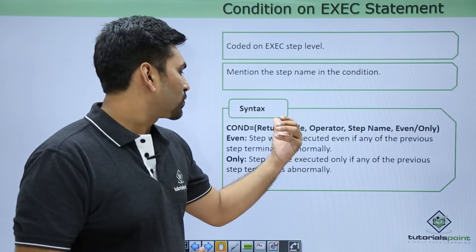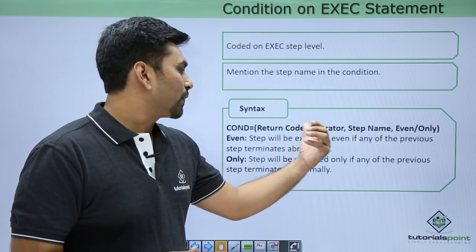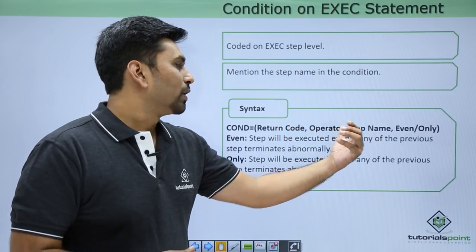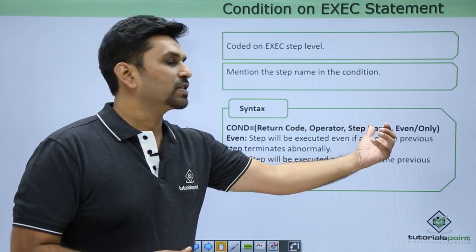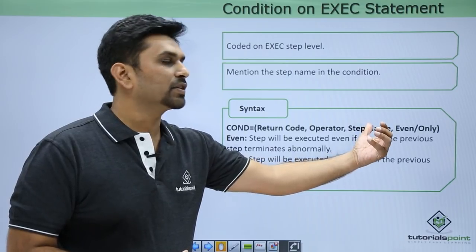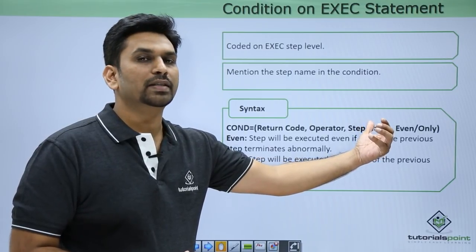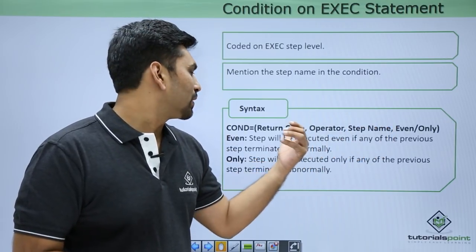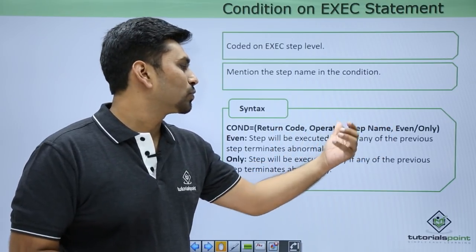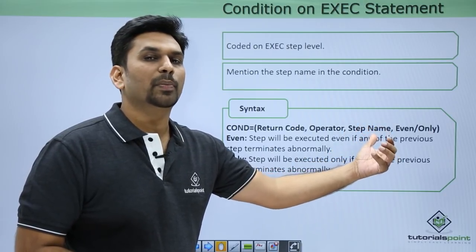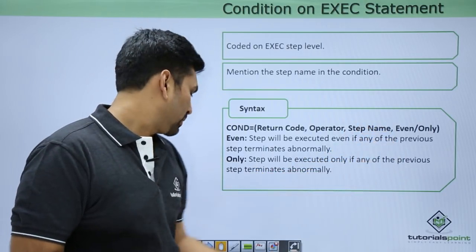To read an EXEC-level condition: suppose the value is 0, operator is equal to, and we have mentioned step 1 or step 2, and the return code from step 2 is 0. It will evaluate 0 equal to 0 — condition is true — and that step will be bypassed.